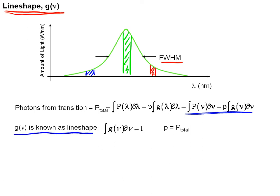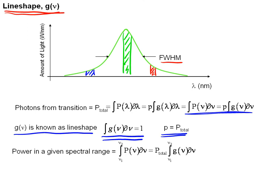G of nu is known as the line shape, and this is an important point. The integral of the line shape over all frequencies equals 1 because the line shape gives the probability that there will be a transition at a particular frequency. Because a transition occurs at some frequency, the integral over all frequencies is unity. The probability is 100% or 1 that there will be a transition. The integral of the line shape equals 1, which means this constant P is simply equal to the total number of photons.